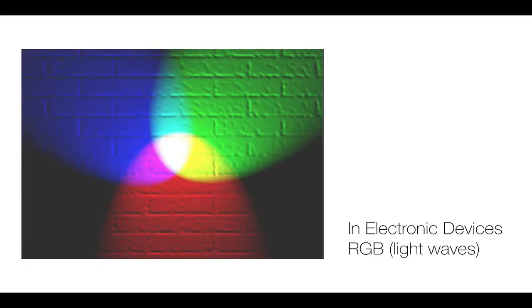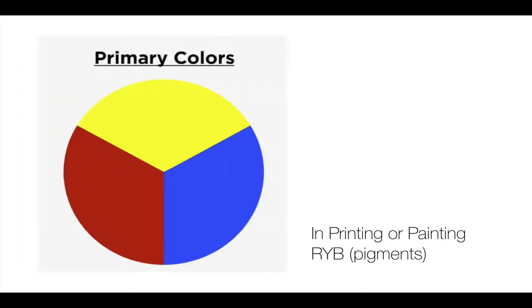When it comes to colors, in electronic devices we talk about the three primary colors being RGB — red, green, and blue. But when it comes to print, there is a little difference because in printing, due to the pigments used, the three primary colors become red, yellow, and blue.